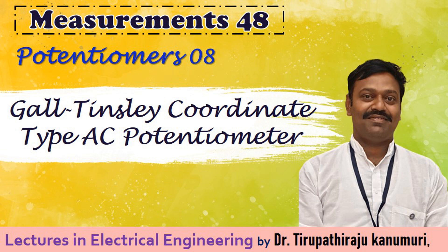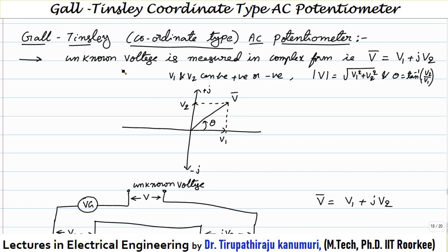Today we are going to discuss the Gal Tinsley AC potentiometer, which is also called the coordinate type AC potentiometer. As the name indicates, it measures the unknown value in coordinate form, or we can call it complex form — the unknown voltage is represented by the sum of the real and imaginary values.